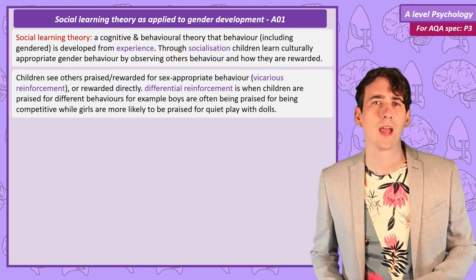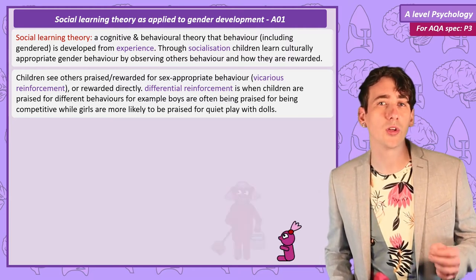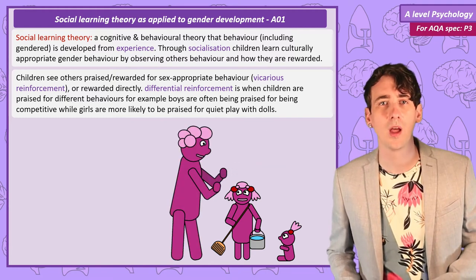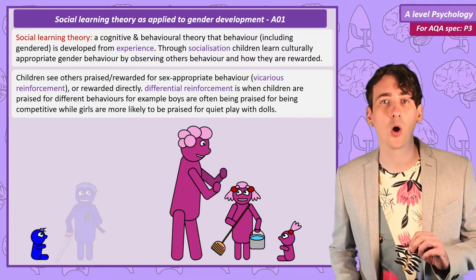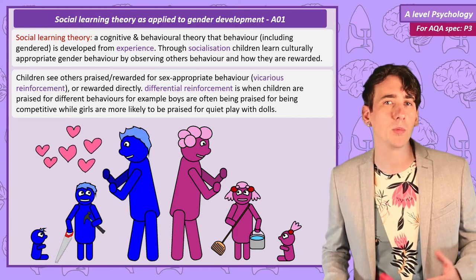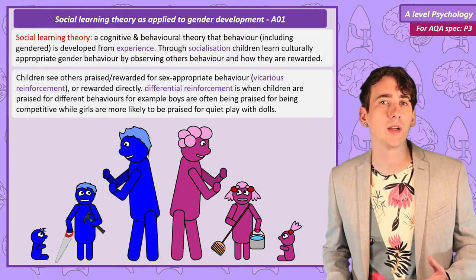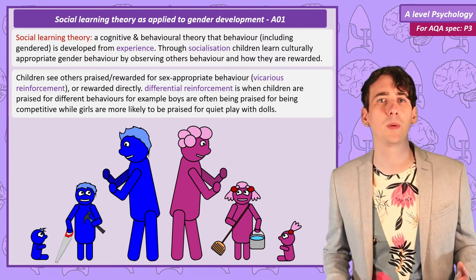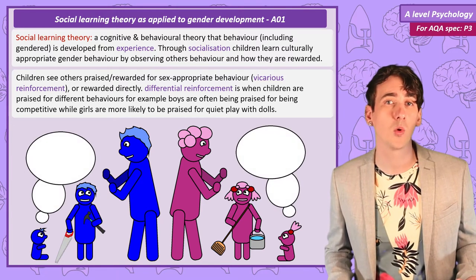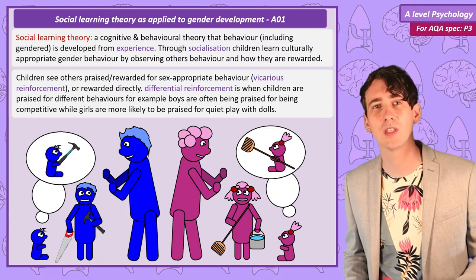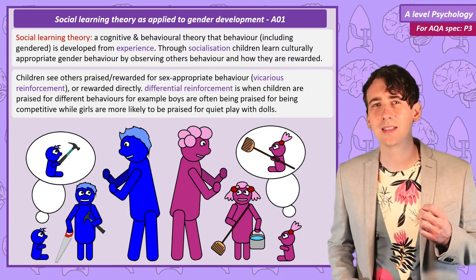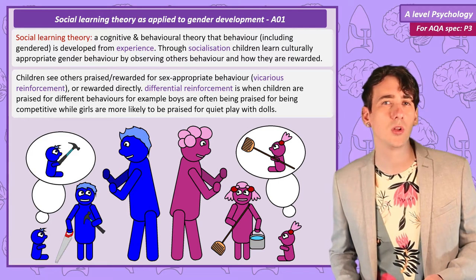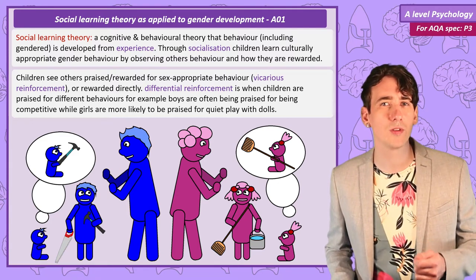Children learn to imitate members of the culture by seeing those people rewarded for gendered behaviour. For example, a female child might see an older girl praised for completing housework or playing quietly, while a male child might see an older boy praised for helping with DIY or taking part in a competitive and aggressive sport. This is called differential reinforcement — the fact that in society different behaviours are rewarded depending on the sex of the individual.